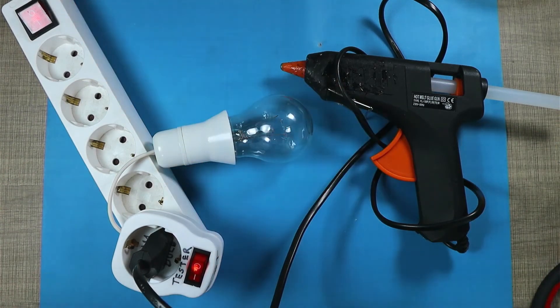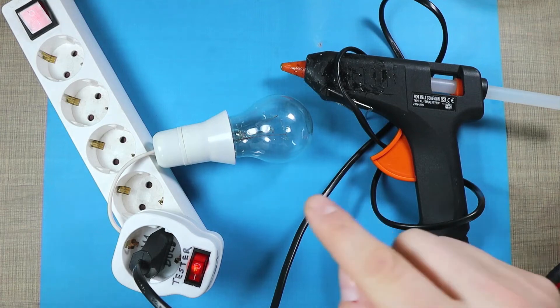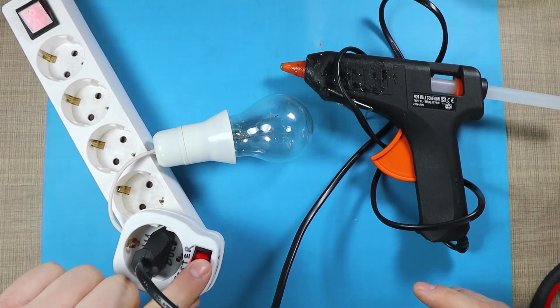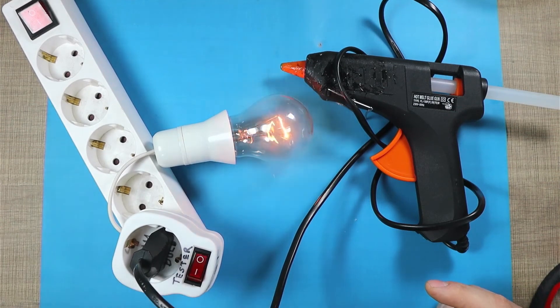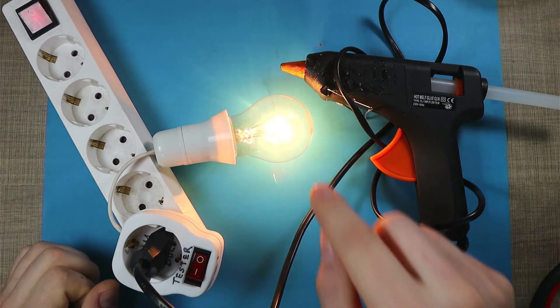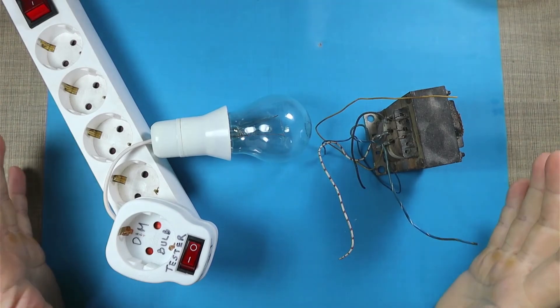If we now want to provide the full current to the device, we can just bypass the light bulb and now the hot glue gun is powered as if plugged in directly into the outlet. If we want to return it in test with the light bulb, we just switch off here and now all of the current is forced to pass through the light bulb.